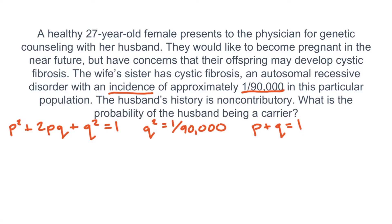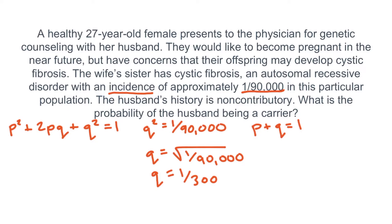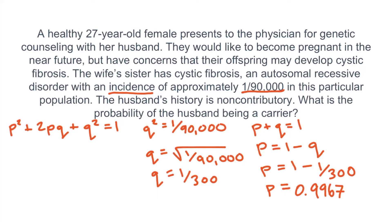First we need to find Q by taking the square root of 1 over 90,000. The test will give you simple square root problems — for example, the square root of 40,000, 90,000, and 160,000 can all be easily solved. Since 300 times 300 equals 90,000, the square root is 1 over 300, so Q equals 1 over 300. We can then solve for P using P plus Q equals 1, rearranging to P equals 1 minus Q. Plugging in the numbers: P equals 1 minus 1 over 300, which gives P equals approximately 0.9967.